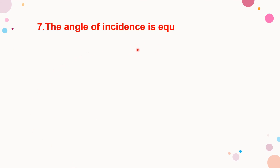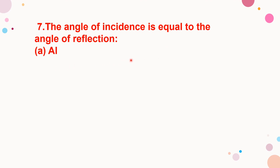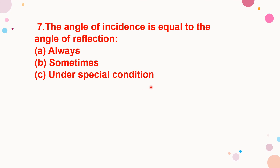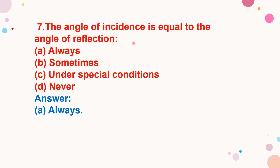The angle of incidence is equal to the angle of reflection — always, sometimes, under special conditions, or never? The answer is: always. The angle of incidence is always equal to the angle of reflection. This is the first law of reflection.